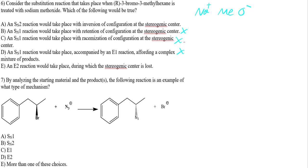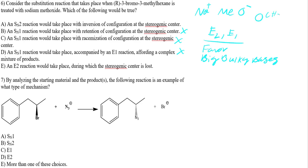Which is it — SN2 or E2? Sodium methoxide (OCH₃) is a bulky base: it has an oxygen, one carbon, and three hydrogens — five atoms total, versus just three for sodium hydroxide. Eliminations favor big bulky bases. Because sodium methoxide is a big bulky base, it's going to be an E2 reaction.